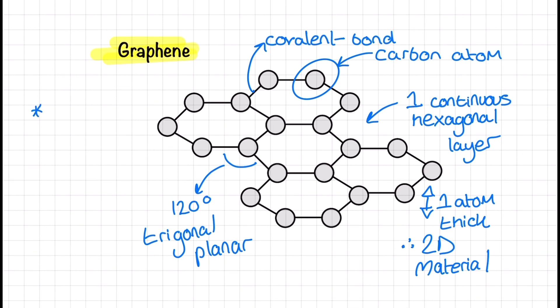We also still have our delocalized electrons meaning that graphene can conduct electricity in two dimensions. A final point about graphene is that it is one atom thick and therefore considered a two-dimensional material.